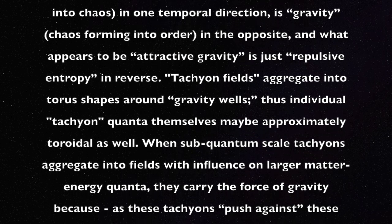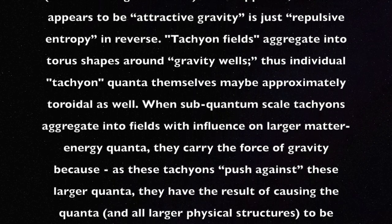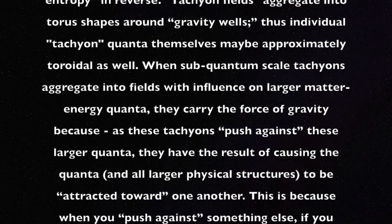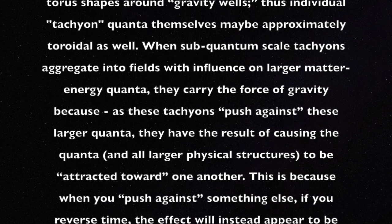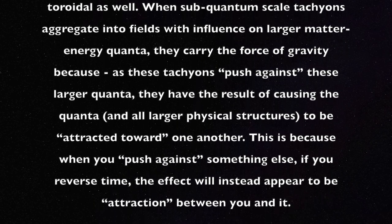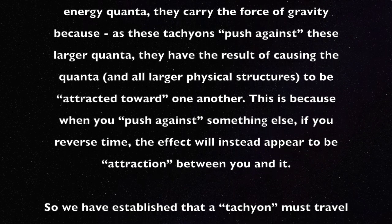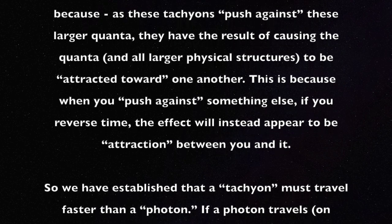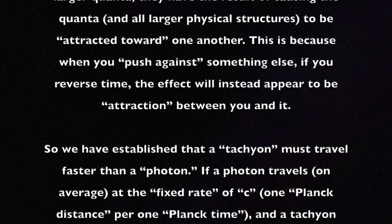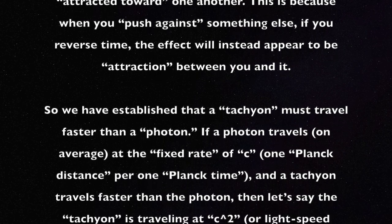Tachyon fields aggregate into torus shapes around gravity wells. Thus, individual tachyon quanta themselves may be approximately toroidal as well. When sub-quantum-scale tachyons aggregate into fields with influence on larger matter-energy quanta, they carry the force of gravity, because as these tachyons push against these larger quanta, they cause the quanta and all larger physical structures to be attracted toward one another. This is because, when you push against something else, if you reverse time, the effect will instead appear to be attraction between you and it.